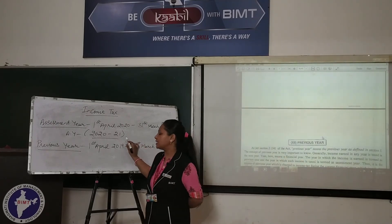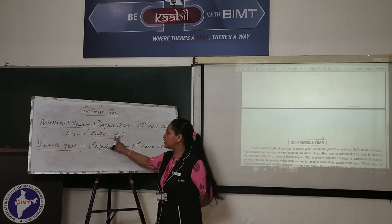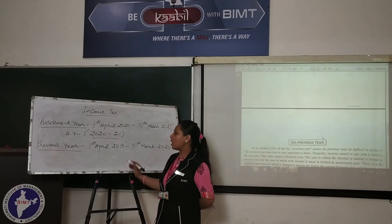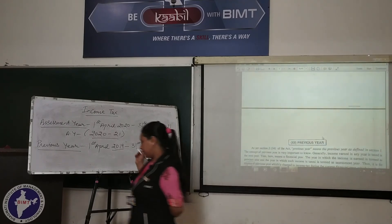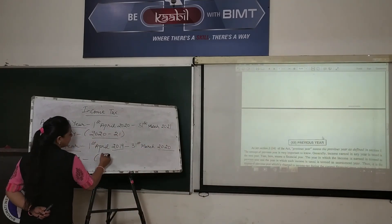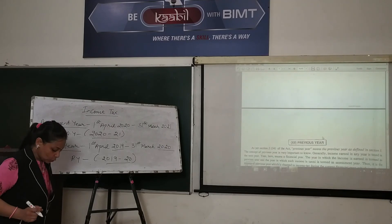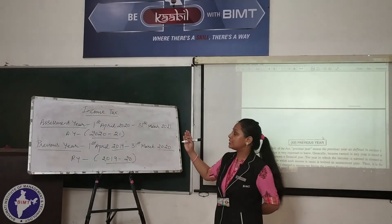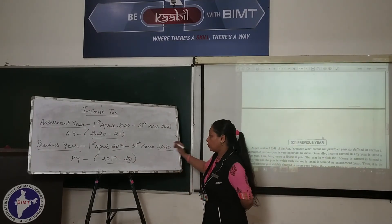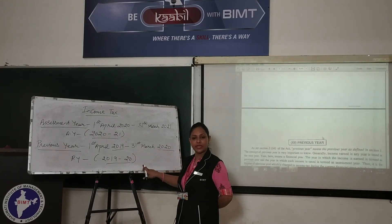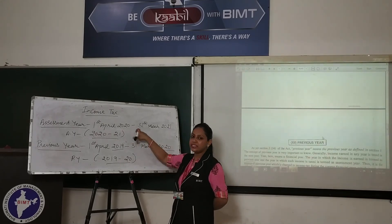We must always remember that the year is a time period of 1 year. If 2020-2021 is the Assessment Year, then what year is 2019 to 2020? 2019 to 2020 is the Previous Year. So the Previous Year is 2019 to 2020. The Previous Year is the year in which we earn income — it is the year of earning, while the Assessment Year is the upcoming year in which tax is calculated.